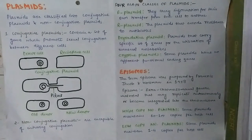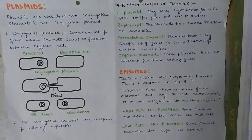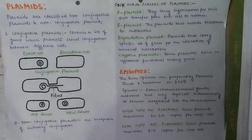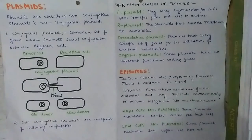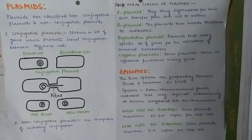There are four main classes of plasmid: F plasmid, R plasmid, degradative plasmid, and cryptic plasmid. F stands for fertility — F plasmids carry information for their own transfer from one cell to another. R plasmids encode resistance to antibiotics. Degradative plasmids carry a specific set of genes for the utilization of unusual metabolites. Cryptic plasmids are unique plasmids that have no apparent functional coding genes other than those for replication.